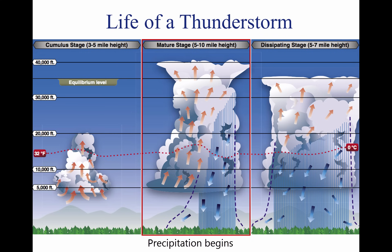Warm rising air, cool precipitation-induced descending air, and violent turbulence all exist within and near the cloud. Below the cloud, the downrushing air increases surface winds and decreases the temperature. Once the vertical motion near the top of the cloud slows down, the top of the cloud spreads out and takes on an anvil-like shape.